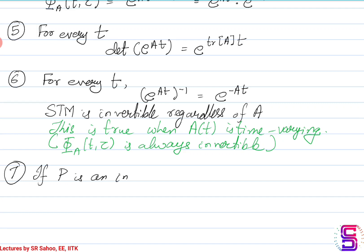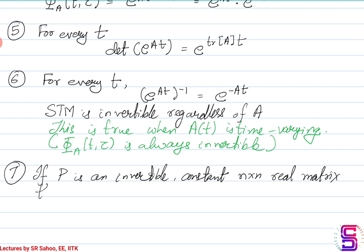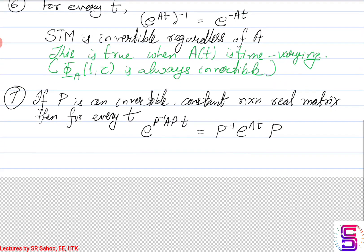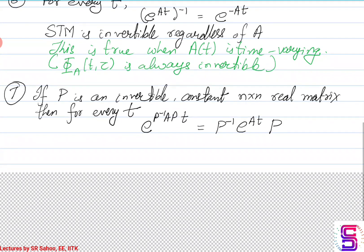If P is an invertible constant n×n real matrix, then for every t, e^(P⁻¹APt) is the same as P⁻¹ e^(At) P. This is another property that we have.